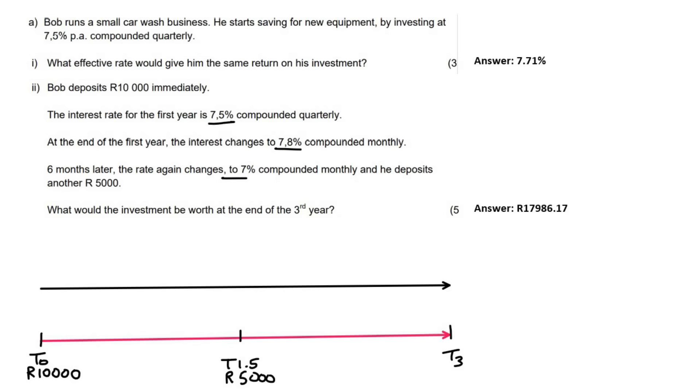Then in the timeline at the top, I like to do all my interest rates. So we are told that the interest rate for the first year is 7.5%. So up till T1, from T0 to T1, the interest rate was 7.5% quarterly. So I'll say 7.5% quarterly.